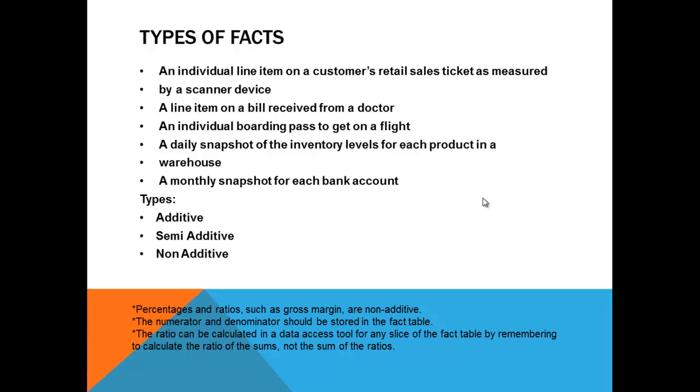Percentages and ratios such as gross margin are non-additive. You cannot take a ratio and sum it up. Or you cannot take a gross margin and sum it up. You will have to only sum it up with a net margin. So the numerator and denominator should be stored in the fact table. The ratio can be calculated in a data access tool for any slice of the fact table by remembering to calculate the ratio of the sums, not the sums of the ratio.